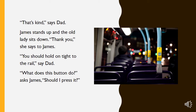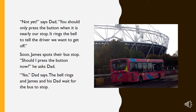Thank you, she says to James. You should hold on tight to the rail, says Dad. What does this button do? Asks James. Should I press it? Not yet, says Dad. You should only press the button when it's nearly our stop. It rings the bell to tell the driver we want to get off.